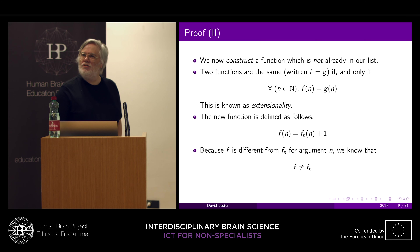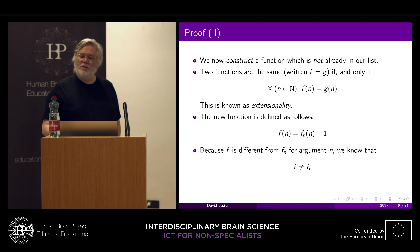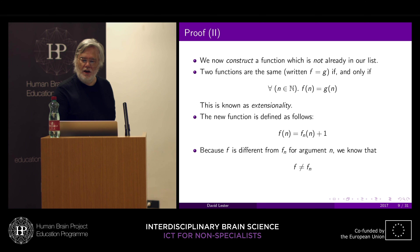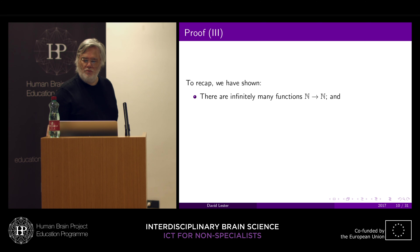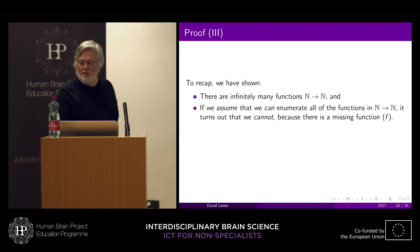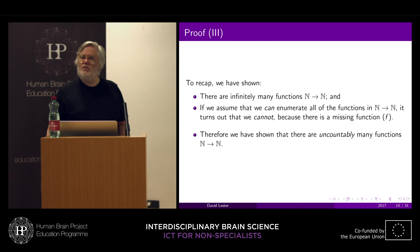So we've found a new function which was not in our enumerated list — and that's a contradiction. That means the idea that we could enumerate them in the first place was wrong. We assumed it was countable and generated a contradiction, so now we know it's actually uncountable. To recap: there are definitely infinitely many functions; if you assume you can enumerate all the functions, you cannot, because of this missing function we just constructed; therefore there are uncountably many functions from natural numbers to natural numbers.